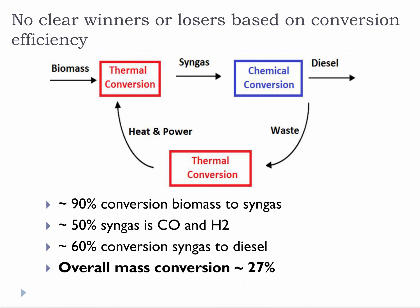Once you learn how to visualize and simplify these processes, you can begin comparing them. There are no clear winners or losers based on conversion efficiency — they all end up looking fairly similar depending on the process. In the case of biomass to Fischer-Tropsch diesel, you get about 90% conversion of biomass to syngas in your gasifier. About 50% of the syngas produced is carbon monoxide and hydrogen, meaning only about 50% of the syngas is useful for synthesis. The conversion efficiency from syngas to diesel across the catalytic reactor is usually around 60%, leading to an overall mass conversion of about 27%.